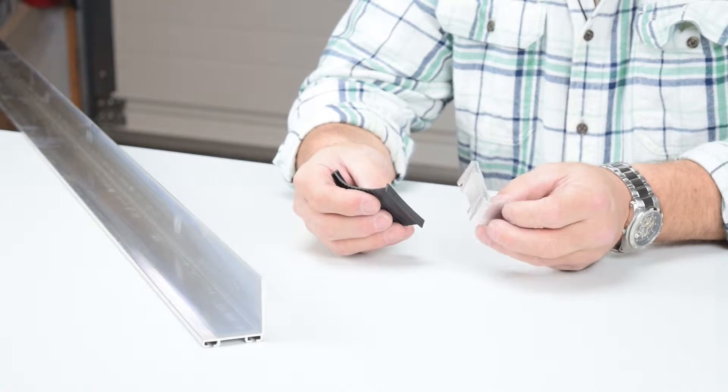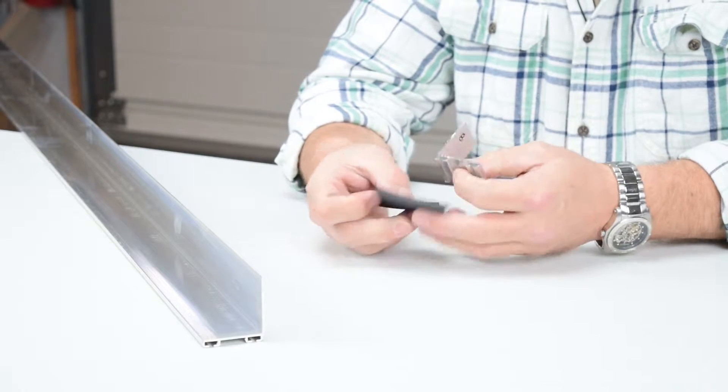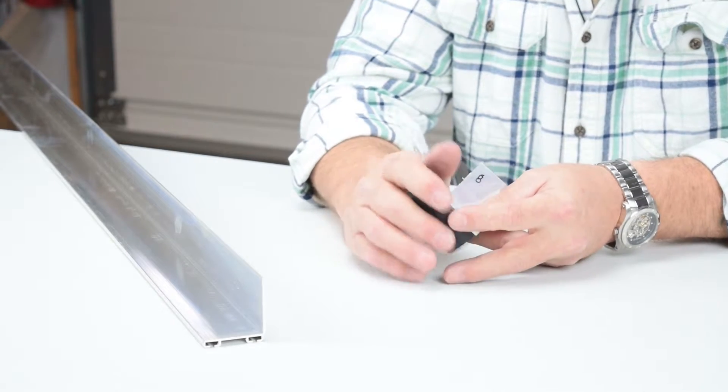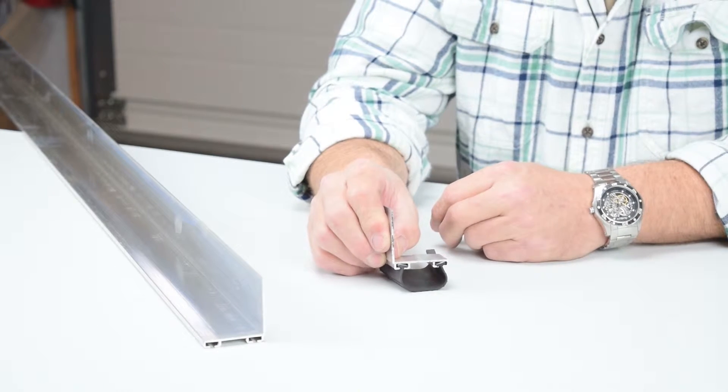This retainer accepts, as do all of our retainers, quarter inch T-style weather seal, quarter inch across, simply slides into the two channels here, and there's your seal.